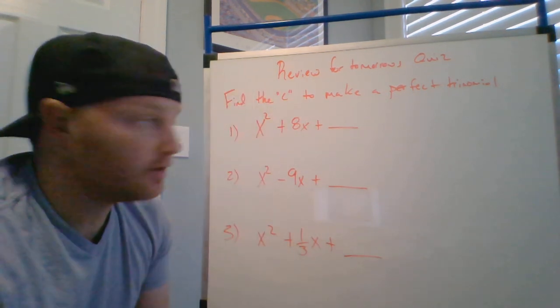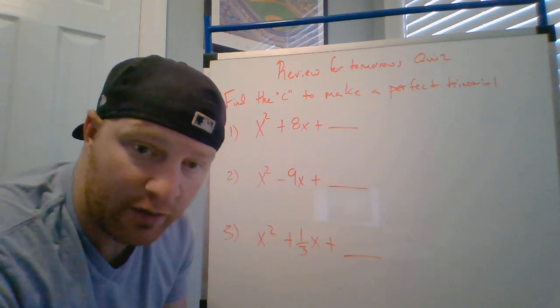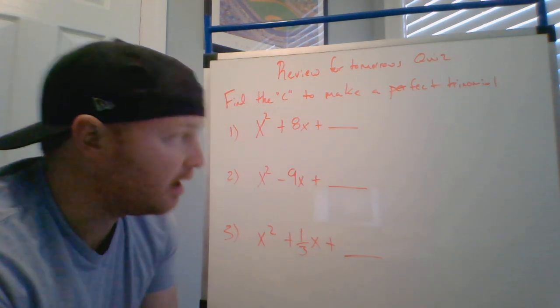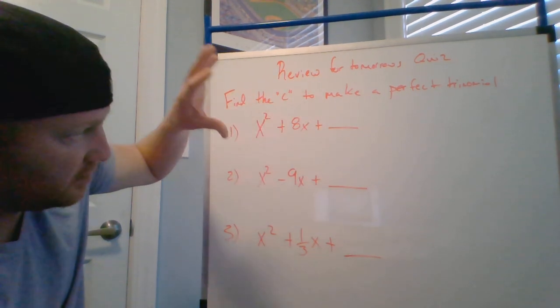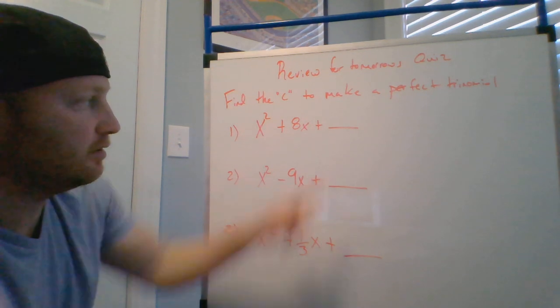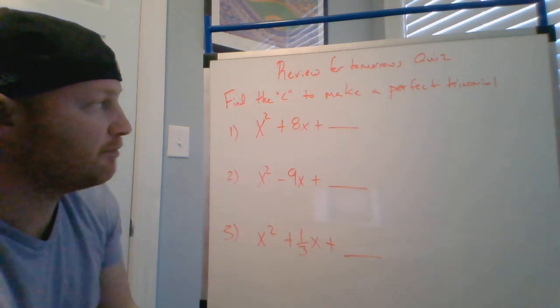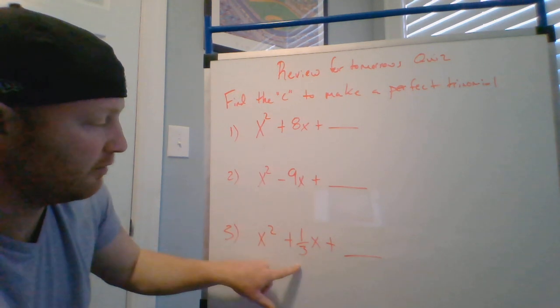Good morning. All right, so today we're going to work on our review from our quiz, which is completing the square based on a lot of your questions. This seems to be an area of concern. So my first one's going to be just an intro, just thinking through it correctly. My directions say find the C, which is this last term, to make this a perfect trinomial. I'm starting easy, getting medium, then getting pretty hard.